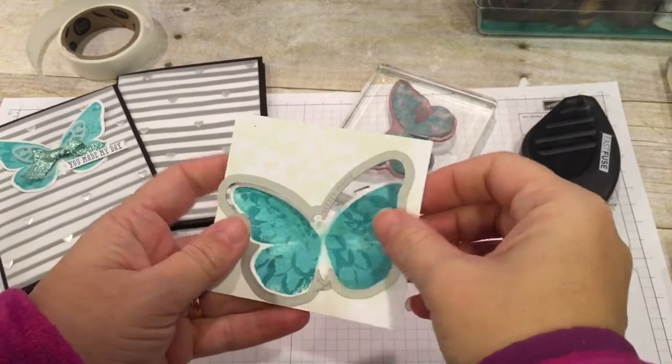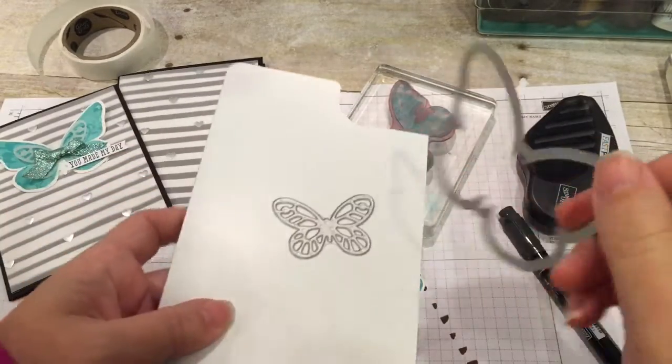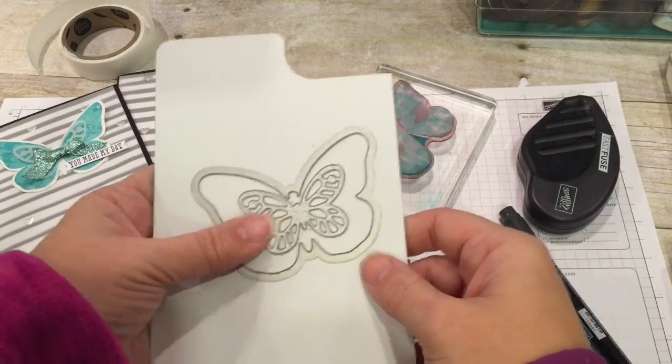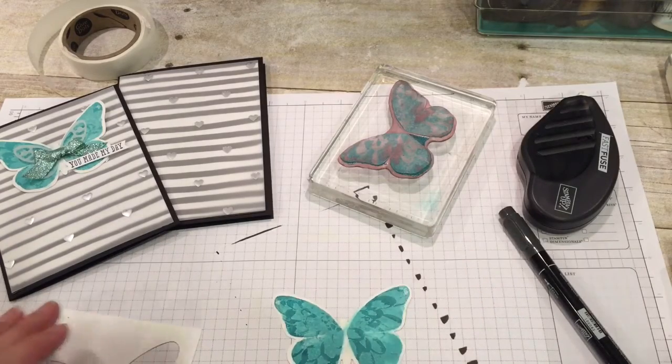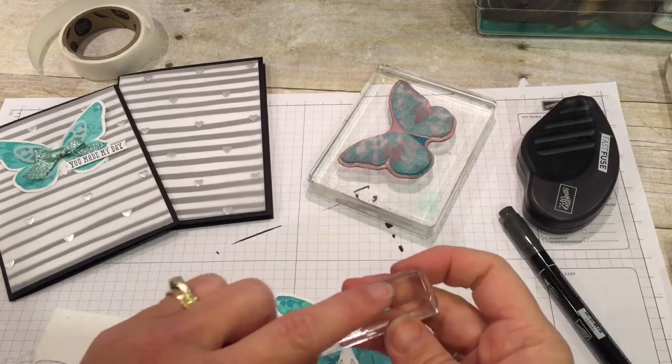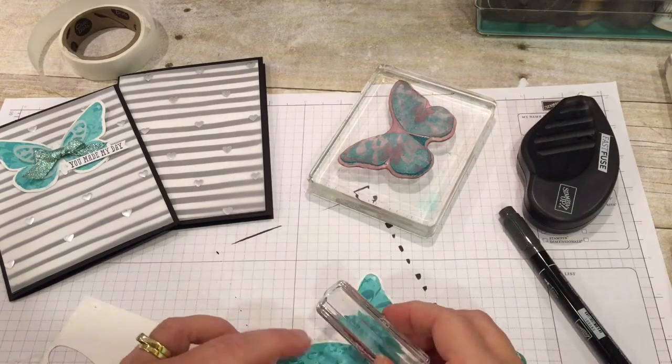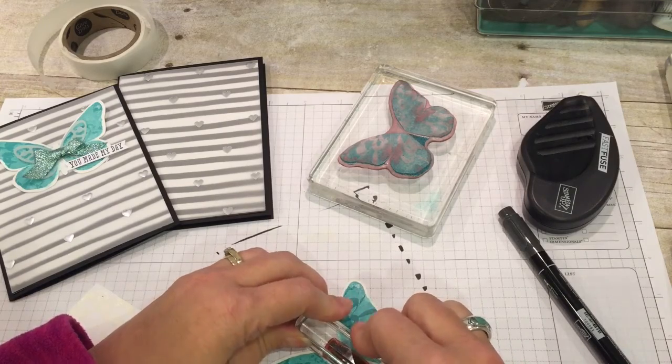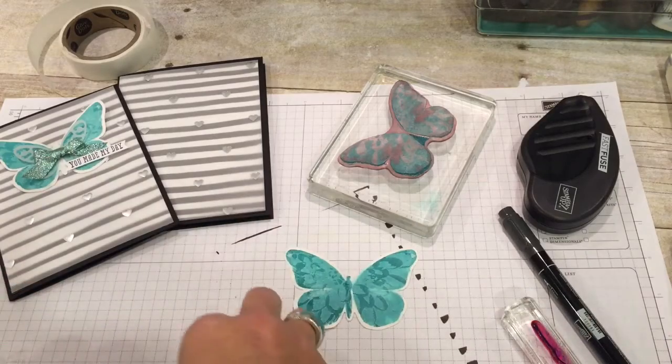So I used my big shot to cut this piece out and this is from the Framelit set that coordinates with our watercolor wing stamp set. It has these two pieces in it and then I'm going to go ahead and stamp the little body or abdomen. Now here's one of those instances where you got to get your butt out. Pardon my hair in the shot. But then you can stamp it pretty well in the center. Okay.